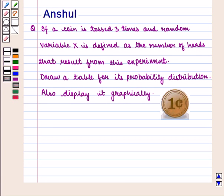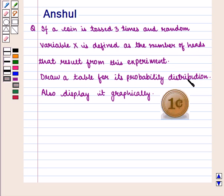Hello and welcome to the session. In this session, we shall discuss the following question: If a coin is tossed three times and random variable X is defined as the number of heads that result from this experiment, draw a table for its probability distribution and also display it graphically.